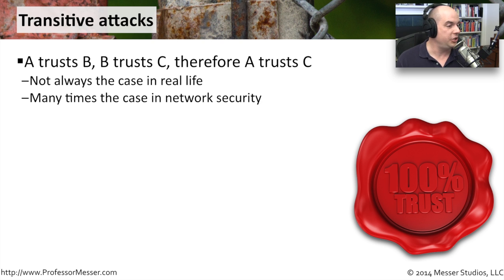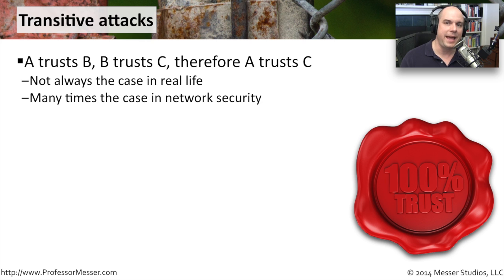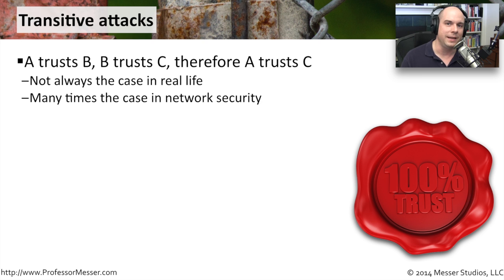A transitive attack is where machine A trusts machine B and machine B trusts machine C. Therefore I can attack machine C and machine C will automatically be trusted by A. This may not be something you want to occur — it may be happening just because of the series of trusts that's been set up. Maybe in reality you really did not want A trusting C, but because of this transitive nature of trust in operating systems it's something that may already be there.